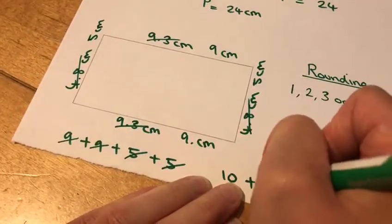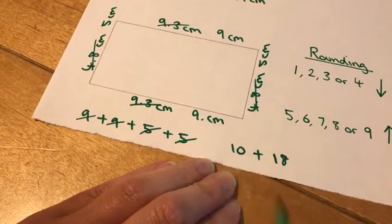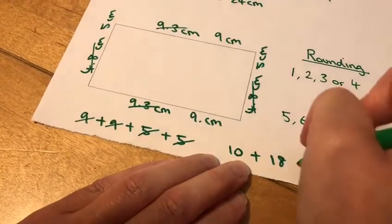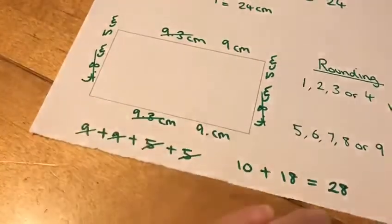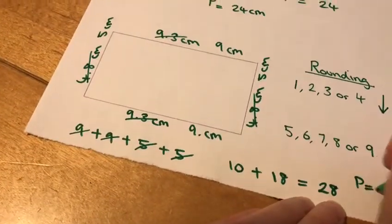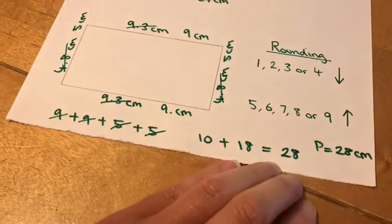So I'm going to jot that down as well, and then it should be very easy to do 18 plus 10 or 10 plus 18. It is 28, so the perimeter of this last rectangle here is 28 centimetres.